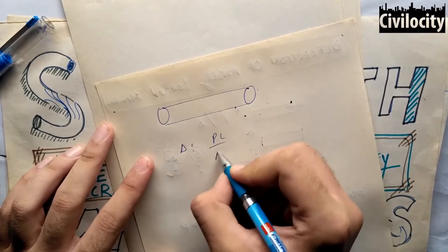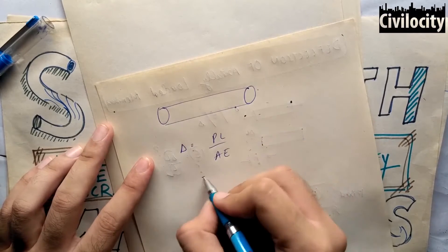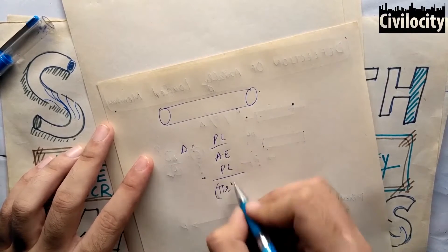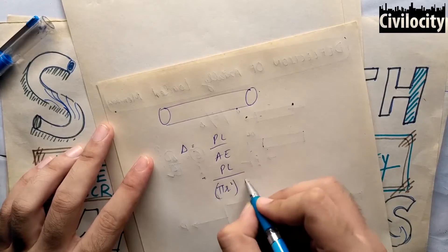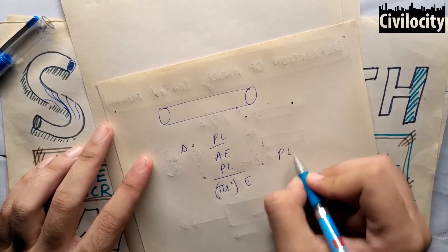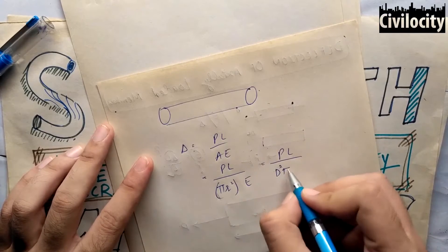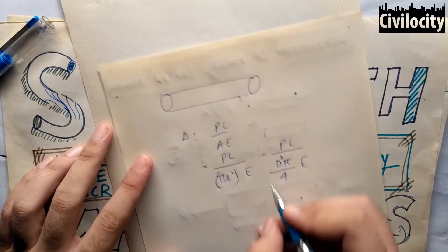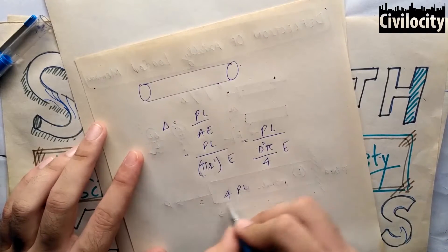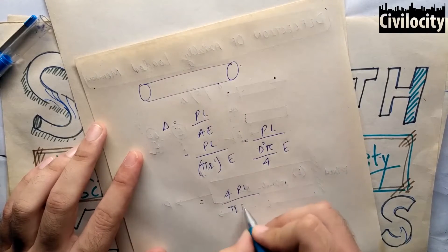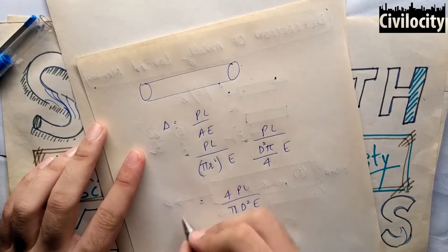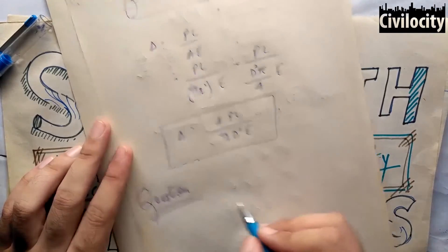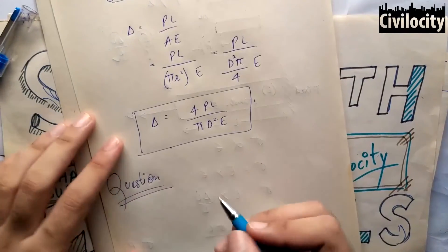Suppose we have a circular prismatic bar. Then the area of a circle is pi R squared. Putting the value of pi R squared in PL upon AE and substituting R equals D over 2, the deflection will be equal to 4PL upon pi D squared into E. This is the deflection formula for a circular prismatic bar.